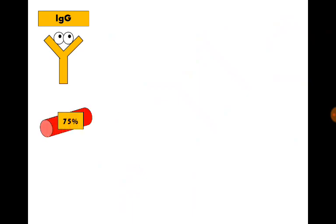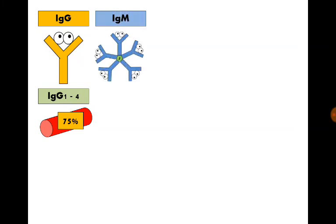We have five classes of immunoglobulins. Immunoglobulin G, 75% of circulating immunoglobulins. There are four subclasses of immunoglobulin G: IgG1, 2, 3, and 4. Immunoglobulin M is a pentamer constituting 8 to 10% of circulating immunoglobulins.